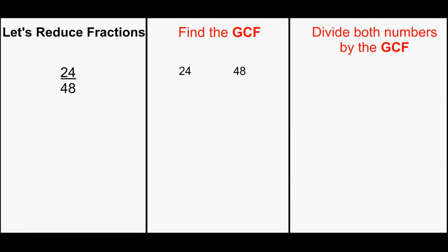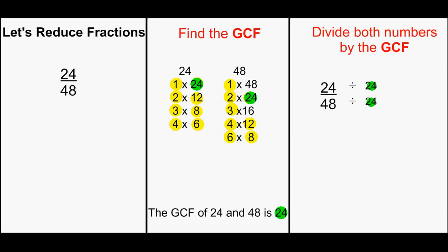Let's reduce the fraction 24 48ths. First, find the GCF. List the factors, the common factors, the greatest common factor. The GCF of 24 and 48 is 24.